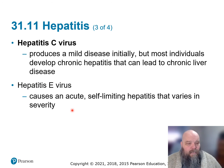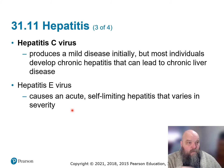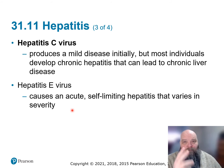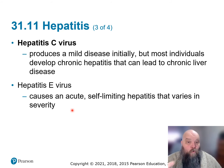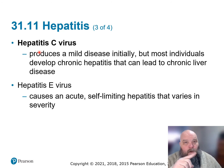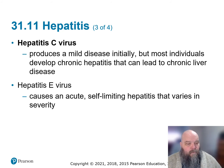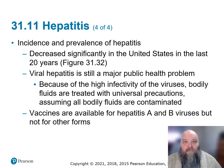Hep E is a self-limiting virus. You get infected, get sick, get inflammation of the liver, the immune system clears it out, and then it takes a week or so for the inflammation to subside and the liver to return to normal. So the ones we watch out for most are B and C — B is acute, C is chronic.